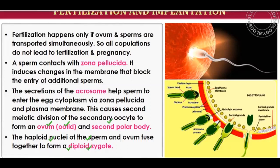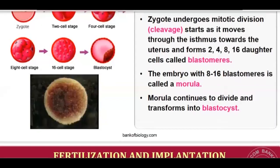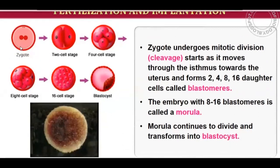The zygote is formed by the fertilization of the sperm and ovum. It undergoes cleavage divisions as it moves through the isthmus towards the uterus, forming 2, 4, 8, and 16 daughter cells called blastomeres.